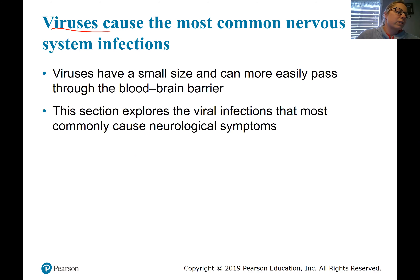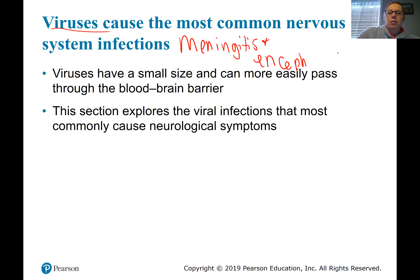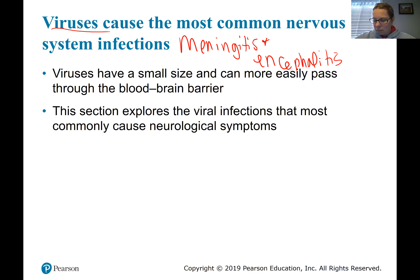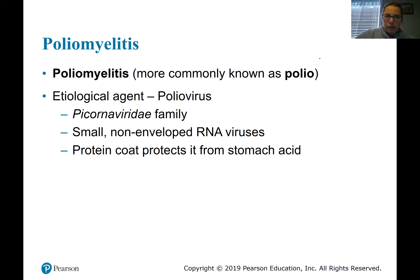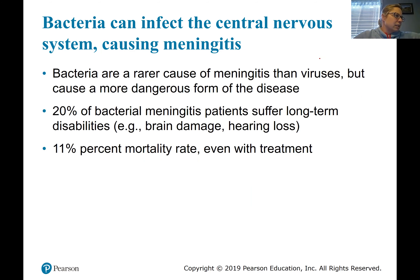Viruses are the most common cause of nervous system infections, things like meningitis and encephalitis. It's good because viral meningitis is usually pretty mild compared to bacterial meningitis. Bacterial meningitis is much more concerning generally, though not always. We're going to focus on bacterial meningitis because that's the more severe form, even though viral is more common.